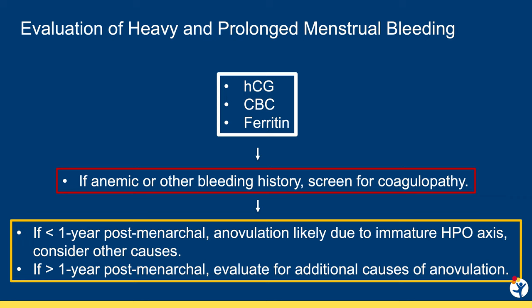All patients should also have a pregnancy test completed. If anemic, patients need testing for a coagulopathy, which will be found in as many as 20% of adolescents who have anemia due to AUB.